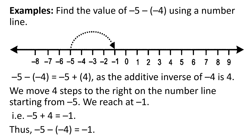Find the value of minus 5 minus minus 4 using a number line. First, you will draw a number line. Now, minus 5 minus minus 4 is equal to minus 5 plus 4, as the additive inverse of minus 4 is 4. We move 4 steps to the right on the number line starting from minus 5. We reach at minus 1 as shown in the figure. That is, minus 5 plus 4 is equal to minus 1.